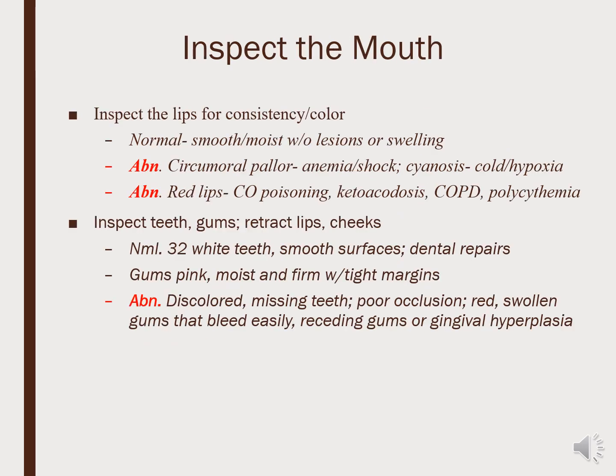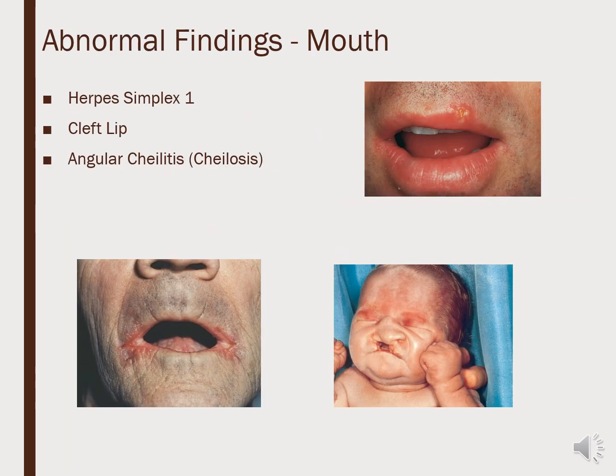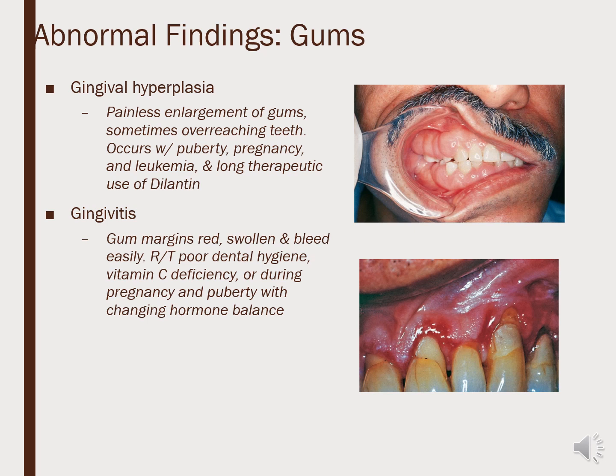When we inspect the mouth, we look at the lips for color. Central cyanosis presents as a bluish lip color, and pallor can appear in the oral mucosa with anemia or low blood values. We inspect the teeth and gums for dental caries or cavities, and whether teeth are broken or missing. Abnormal findings in the mouth include herpes simplex, cleft lip, cheilosis on the corners of the mouth, gingival hyperplasia with inflamed gums, and gingivitis where the gums are receding.